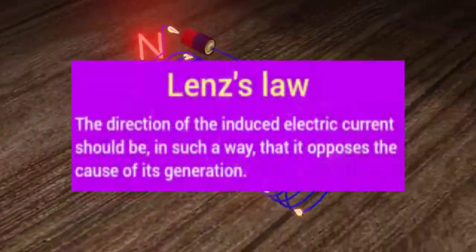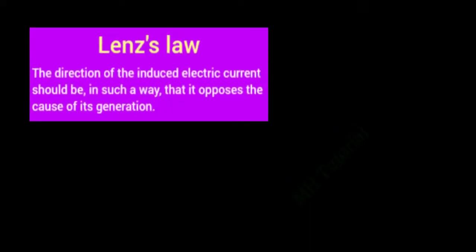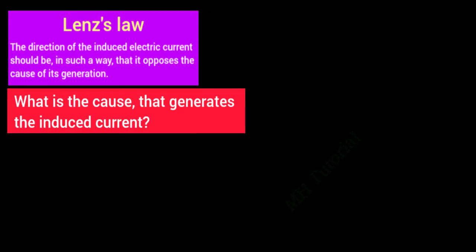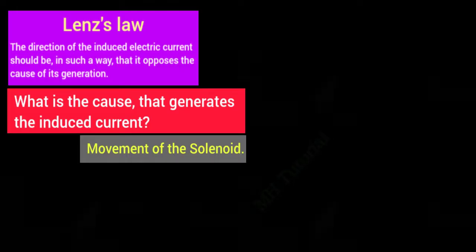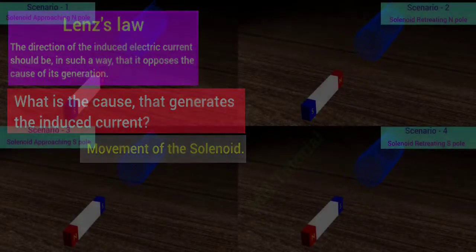We have learned the pole position. Now review the statement of the law again. Here a question arises: what is the cause that generates the induced current? And its answer is the movement of the solenoid. So the induced current should oppose the movement of the solenoid. How does it work? How does it oppose the movement of the solenoid?